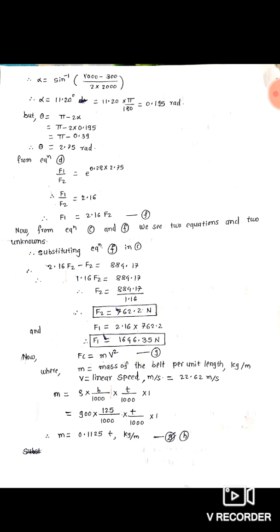We convert alpha to radians: 11.20 × π ÷ 180 = 0.195 radians. Substituting in the theta equation: theta = π − 2α = π − 2 × 0.195 = π − 0.39. Therefore theta = 2.75 radians.